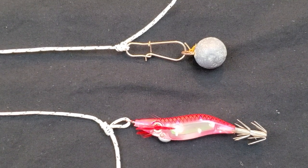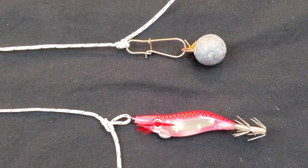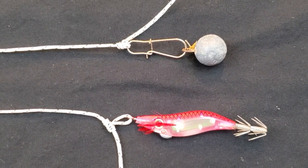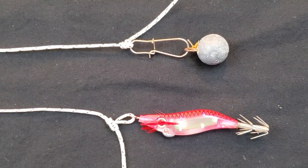There we go. So those are our two knots. We've got the dropper loop on the floating jig and the improved clinch on the snap for the weight.